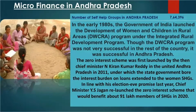Now let us move to microfinance in Andhra Pradesh. In the 1980s, the Government of India launched the Development of Women and Children in Rural Areas — DWCRA — now commonly referred to as DOCRA. Village women form groups of 10 to 15 members, conduct meetings, collect savings, and disperse loans. This program was under the Integrated Rural Development Programme, IRDP. Though not very successful in the rest of the country, it was successful in Andhra Pradesh.